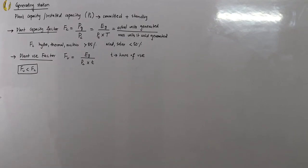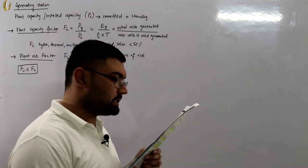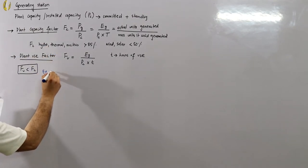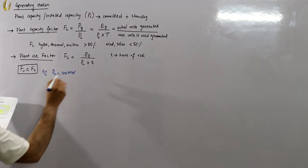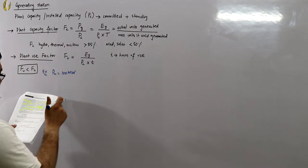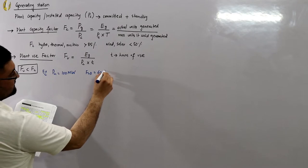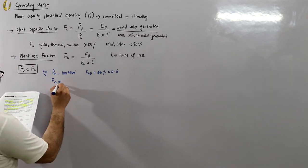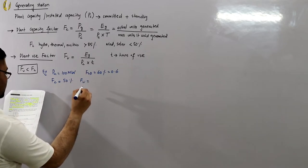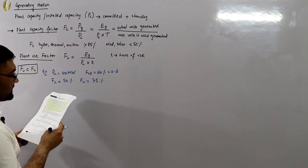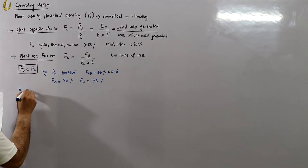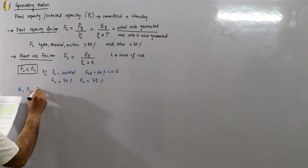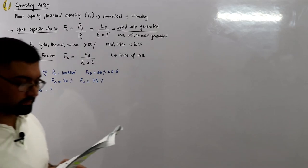Let's do an example. The peak demand of a generating station is 100 megawatts. The daily load factor FLD is 60% (0.6), the plant capacity factor FC is given as 50%, and the plant use factor FU is given as 75%. Determine the daily energy produced, the installed capacity of the plant, and the reserve capacity.